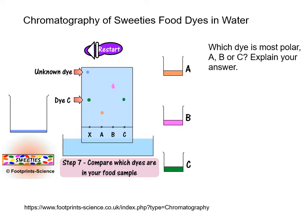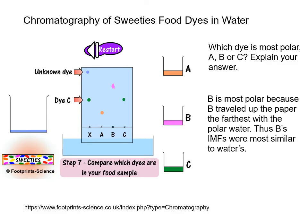Coming back to our chromatography of the SWEETI dyes: which dye is most polar — A, B, or C? Explain your answer. The answer is dye B is the most polar because B traveled up the paper the farthest with the polar water. Thus B's intermolecular forces were most similar to water's.